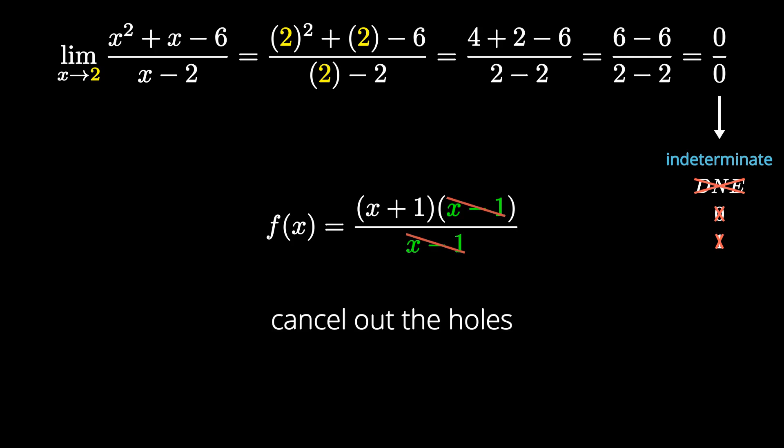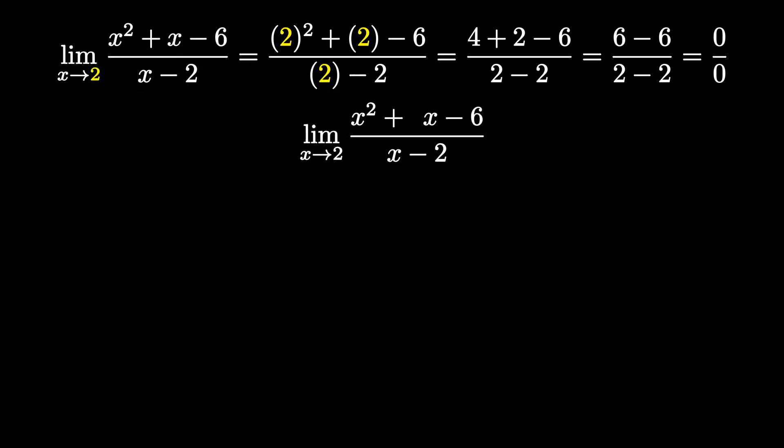So we're going to factor our function. Starting with the top, we have x squared plus x minus 6. When factoring a trinomial where the leading coefficient is 1, you want to focus on the last term — negative 6 in this case — and the middle coefficient, which is 1.